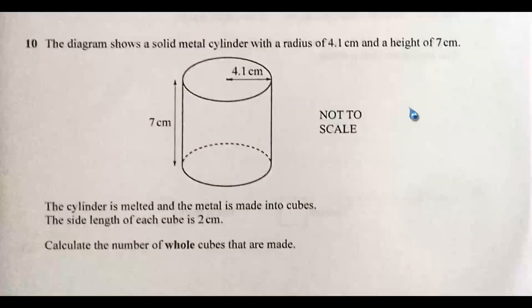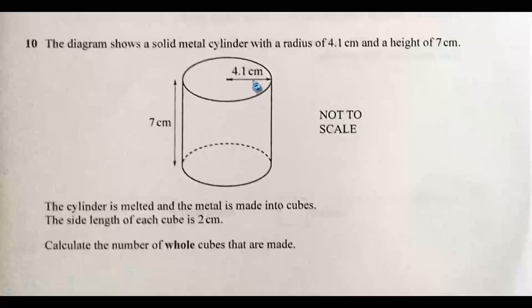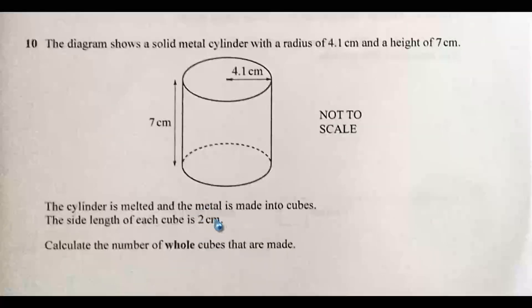Question 10: The diagram shows a solid metal cylinder with a radius of 4.1 centimeters and a height of seven centimeters. The cylinder is melted and the metal is made into cubes with a side length of two centimeters each. Calculate the number of whole cubes that are made. First, calculate the volume of the cylinder, then calculate the volume of one cube. Dividing the cylinder's volume by the cube's volume gives the number of whole cubes.